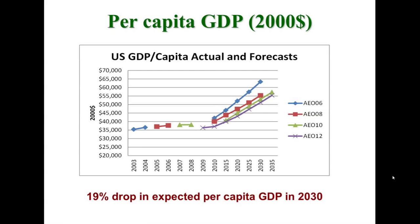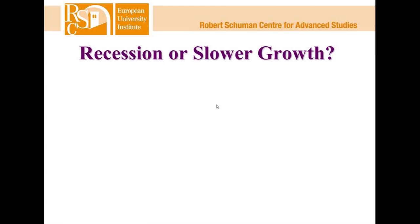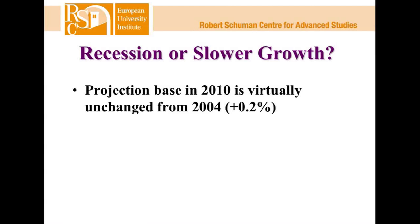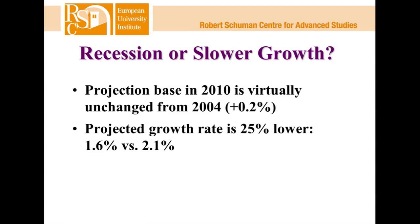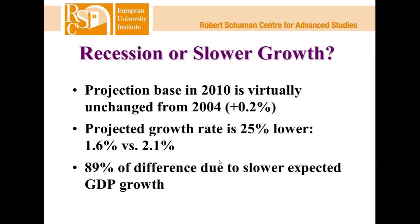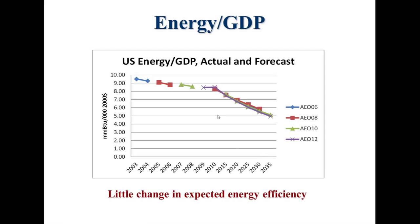The recession has been part of it — the 2010 projection base is virtually unchanged from 2004. But the more important feature is the projected growth rate is now 25% lower, at 1.6% per annum for per capita GDP, versus 2.0–2.1% predicted six years ago. In fact, 89% of that difference in expected per capita GDP growth is due to slower expected GDP growth as it accumulates over the 25 to 30 years of the forecast.